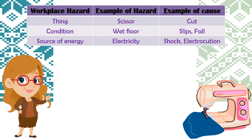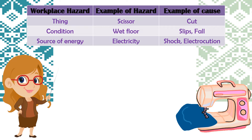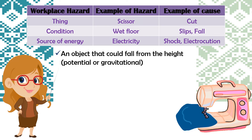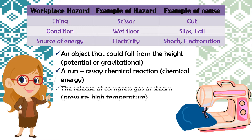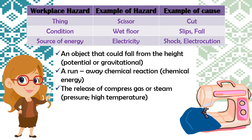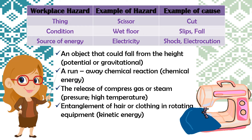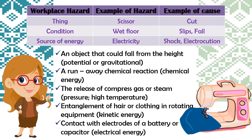Here are examples of workplace hazards with their causes. Example: scissors — cause: cut. Wet floor — cause: slips and falls. Source of energy: electricity — cause: shock or electrocution. An object that could fall from a height — potential or gravitational energy. A runaway chemical reaction — chemical energy. The release of compressed gas or steam — pressure, high temperature. Entanglement of hair or clothing in rotating equipment — kinetic energy. Contact with electrodes of a battery or capacitor — electrical energy.